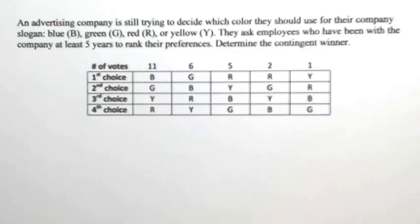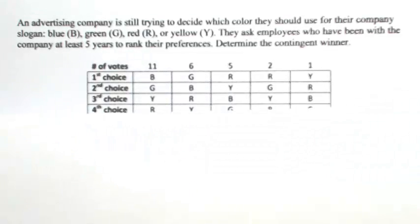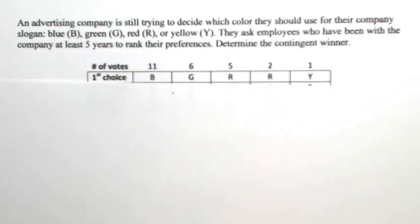So when using the contingent winner method, the only thing we're going to consider is first choice votes. The only thing we're looking at is that first row.